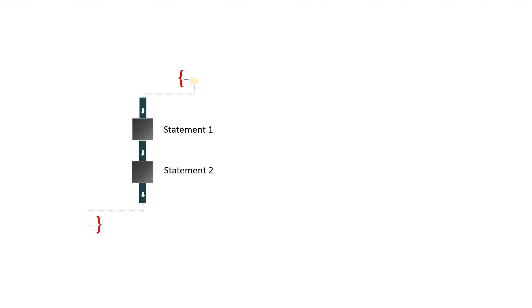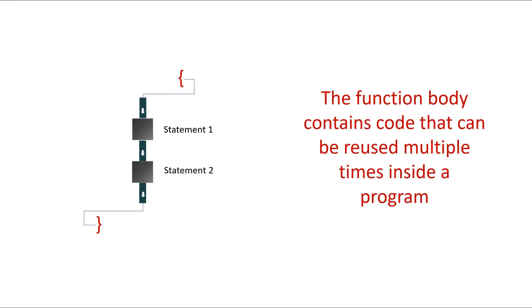Functions have many important parts and one of the most important is the function body. Every function will have a function body. The function body itself would contain statements which we would go through once the function is invoked. The key thing is that the function body contains code that can be reused multiple times inside of a program. This is why we use functions in programming — a function allows us to keep pieces of code together, access them whenever we decide to run them, and then go back to the initial place in the program.